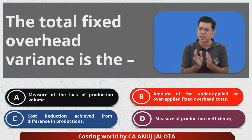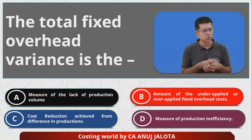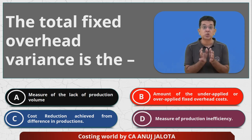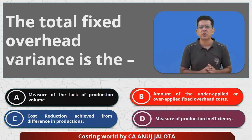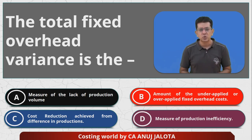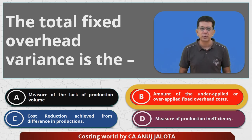Option C — 'cost reduction achieved from difference in production' — is exactly the same as option A, just different words. So C is also eliminated. Option D, 'measure of production efficiency,' refers to fixed overheads efficiency variance: how many hours you should have taken for actual output minus how many hours you actually took. So A, C, and D cannot be the answer — therefore B has to be the correct answer, which is 'amount of overheads under or over applied.'